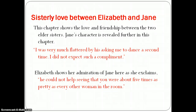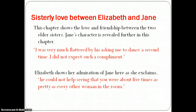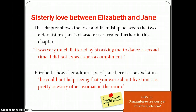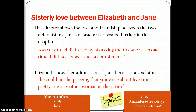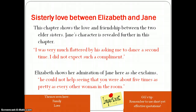Elizabeth also claims Jane is a virtuous woman and very good-looking, noting she will never speak ill of anybody. This shows that Elizabeth is in awe of her sister. Two key themes here are family — as we can see from their bond — and unconditional love, since they are sisters and will love each other no matter what. These are the two most important themes in this chapter.